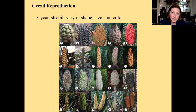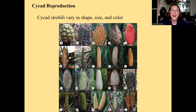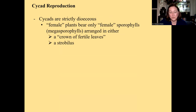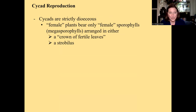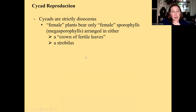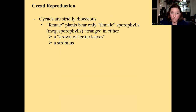You might remember the terms monoecious — one house — and dioecious — two houses, where the house is a plant. Cycads are strictly dioecious, meaning they have female plants and male plants always. Female plants only have megasporophylls.